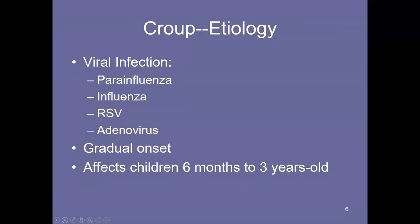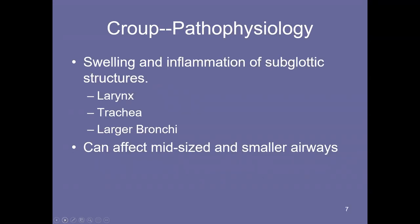Croup — the etiology is viral. The most common viruses implicated are parainfluenza, influenza, respiratory syncytial virus (RSV), and adenovirus, which is actually a family of viruses. Relative to epiglottitis, croup has a more gradual onset and tends to affect children of a younger age — roughly six months to about three years of age. The pathophysiology involves swelling and inflammation of subglottic structures: the larynx, trachea, and larger bronchi, though it can also affect mid-size and smaller airways.